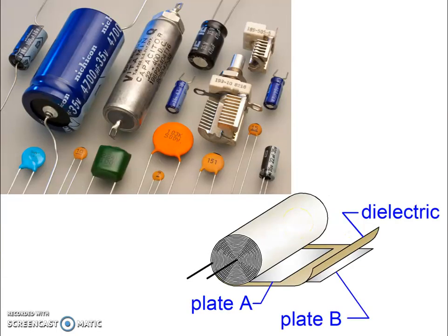We use capacitors for various applications, but one of the basic applications of a capacitor is to store charge. As shown in the figure, you can see there are various sizes and types of capacitors, but every capacitor consists of two metallic plates between which there is a dielectric medium that stores the charge. Capacitors are used in filters and for power factor correction, and every electronic circuit consists of capacitors.